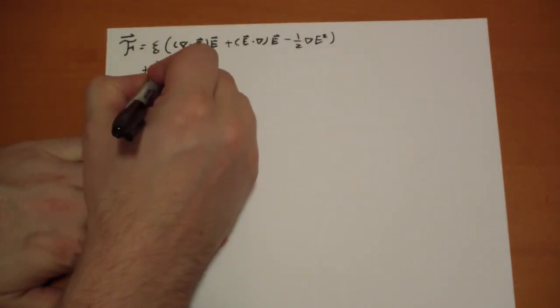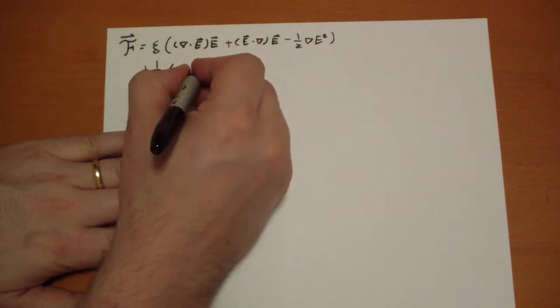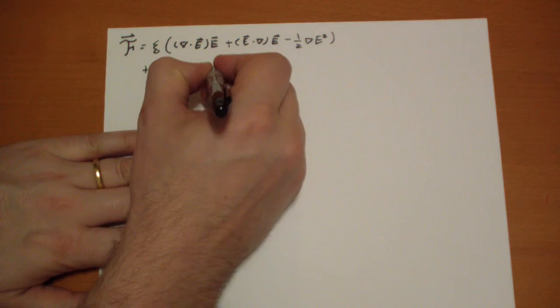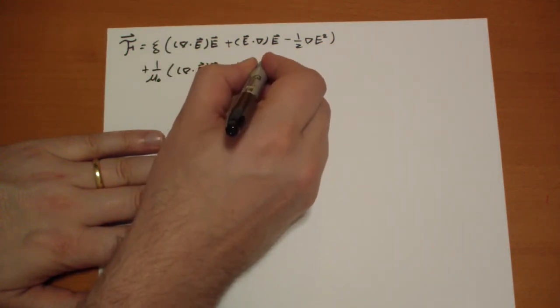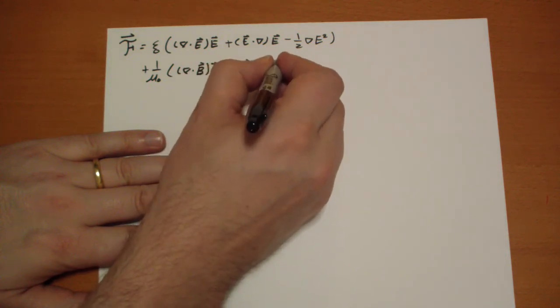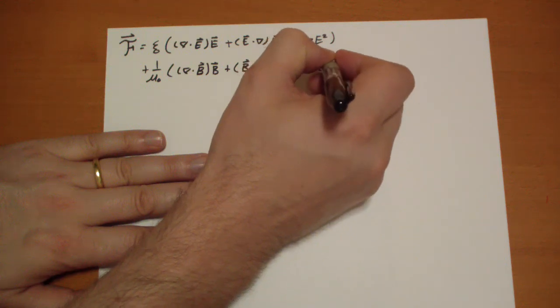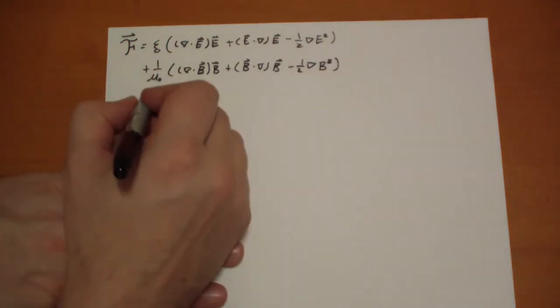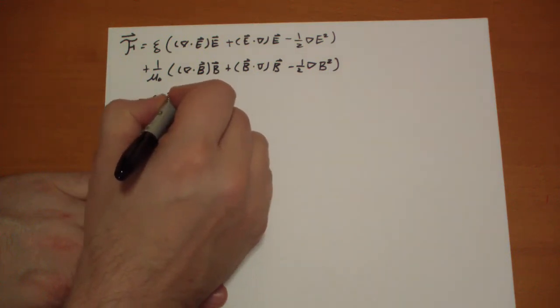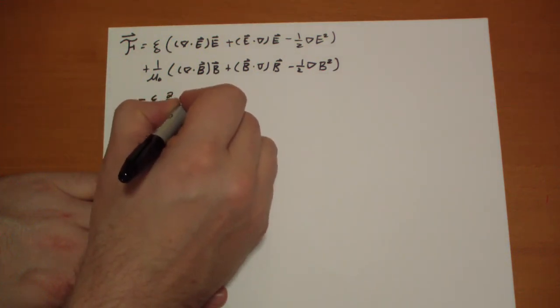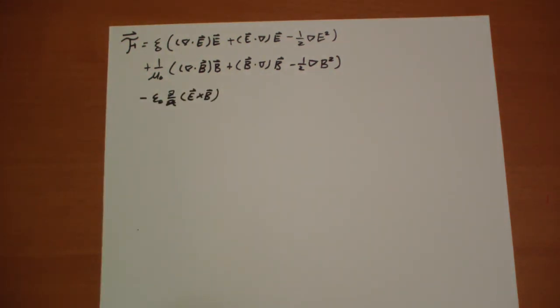Plus one over mu naught over the divergence of E. I'm sorry. B. We're doing magnetic fields now. B vector, which is zero, plus B vector dot del B vector. Minus one over half the gradient of B squared. Minus our epsilon naught D by DT E vector cross B vector. That is the force per unit volume.